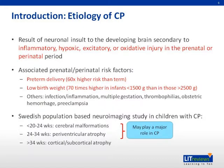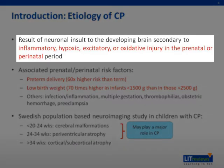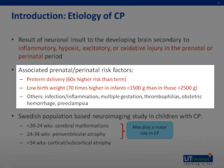The current understanding of the etiology of cerebral palsy shows it is a result of neuronal insult to the developing brain, secondary to inflammatory, hypoxic, excitatory, or oxidative injury in the prenatal or perinatal period. The two biggest perinatal and prenatal risk factors are preterm delivery and low birth weight. The former is associated with 60 times higher risk, and the latter is also associated with 70 times higher risk.